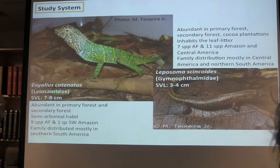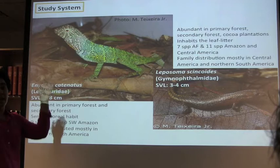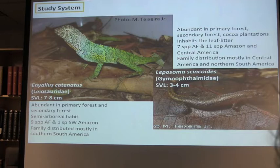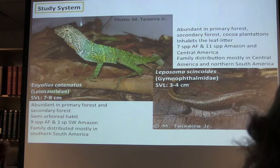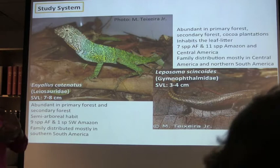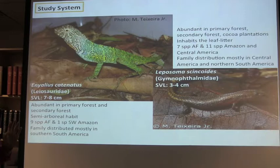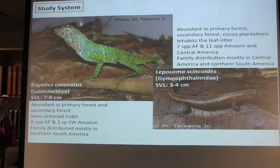Leposoma belongs to the family Gymnophtomidae. It's a forest generalist — it seems to be happy anywhere where you have a leaf litter, a humid leaf litter, and some canopy. So you can find it in primary, secondary forest, and co-plantations. There are six described species and one being described now in the Atlantic forest, and 11 species in the Amazon and Central America. Different from Eniallius and the Leiosauridae, the Gymnophtomidae are basically a tropical family, and Leposoma has a southern distribution in South America.